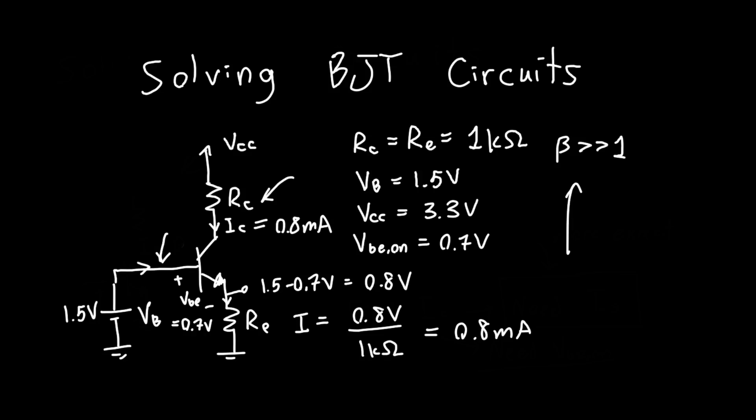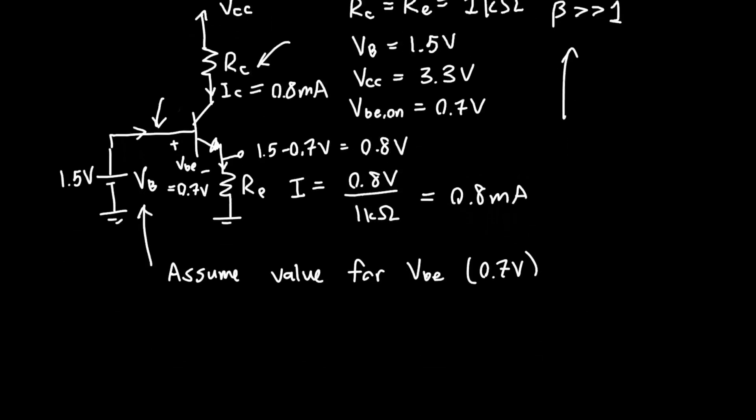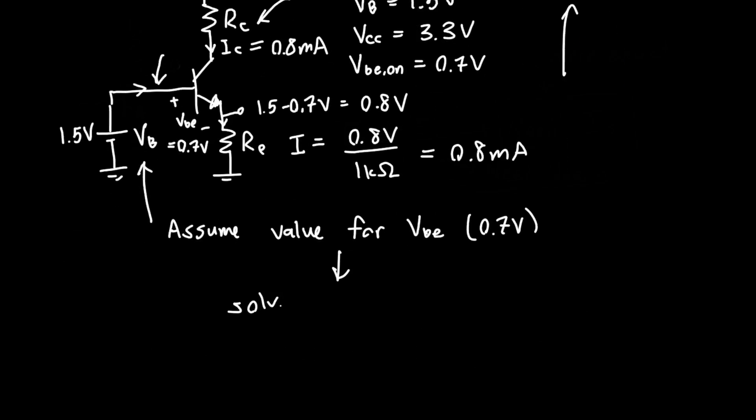That was a small number of steps, not necessarily straightforward if you don't know what to do. But the general procedure is just assume a value for VBE. In this case, we used 0.7 volts. And then you solve for everything else. You solve for the currents.